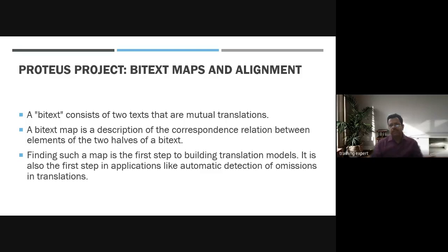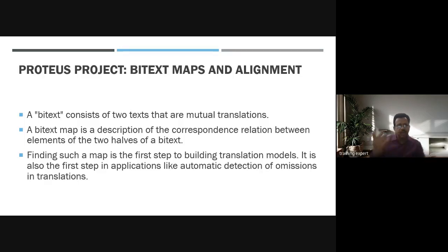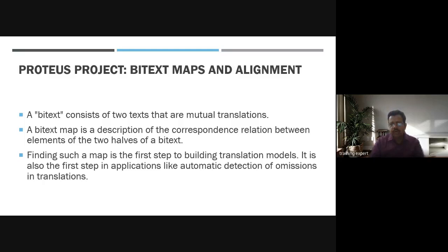Bitex maps and alignments: a bitex consists of two sets that are mutual translations. Some data can be mapped and translated directly. The bitex map is a description of the corresponding relationship between elements of the two halves. Finding such a map is the first step to building a translation model and also the first step in applications like automatic detection of omissions in translations.